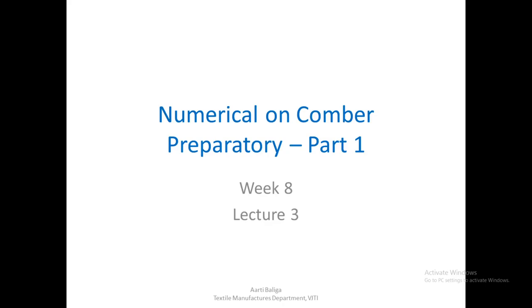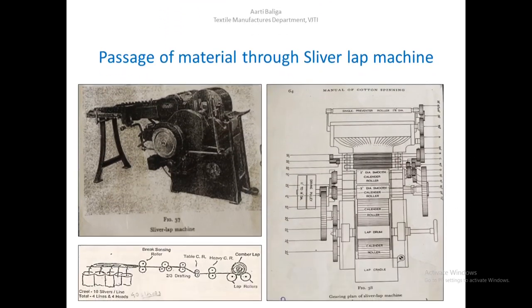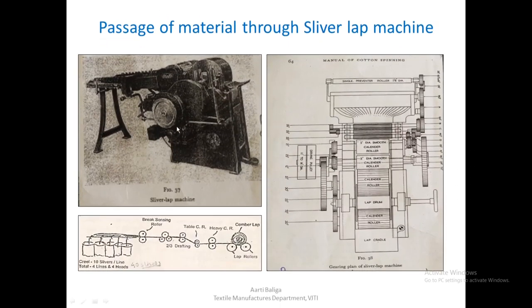Hello, today let us look at some numericals on Comber Preparatory. This is the passage of material through the sliver lap machine, and this is the gearing diagram.